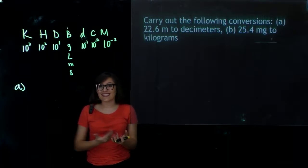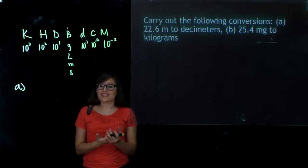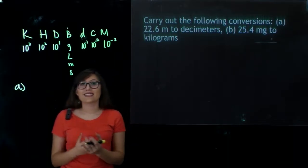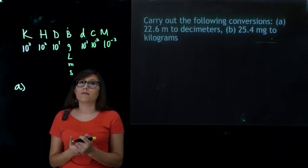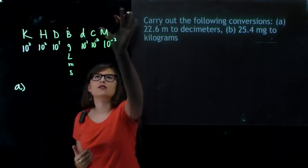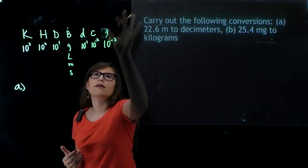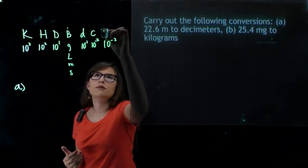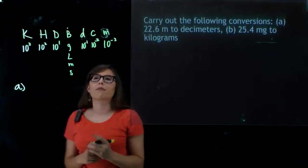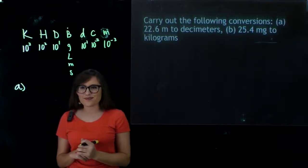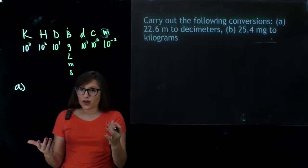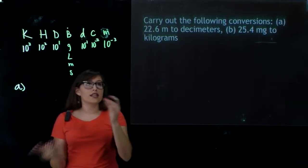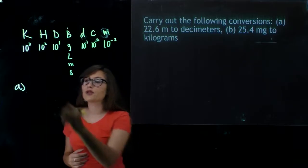Little d is deci, c is centi, and m is milli — and this is lowercase m, just to make sure we're all on the same page. Now that we know that, we can easily do our conversions.